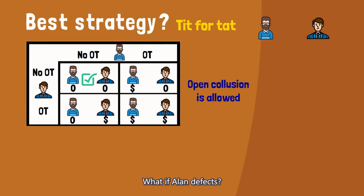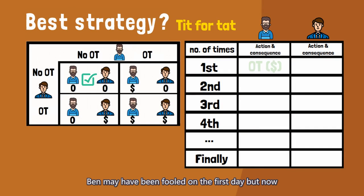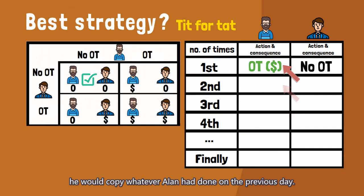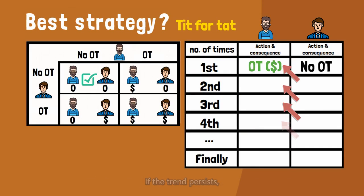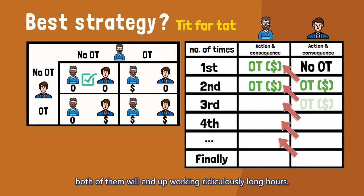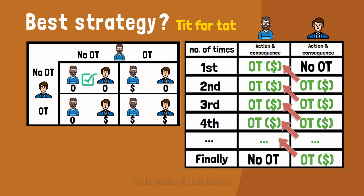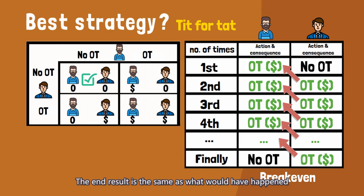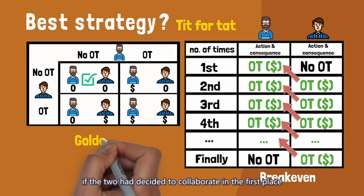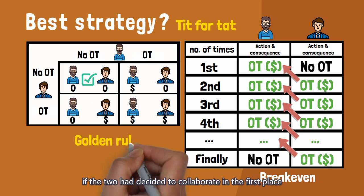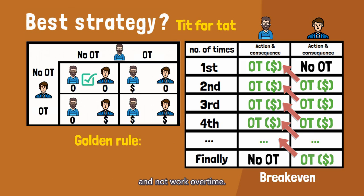What if Alan defects? Ben may have been fooled on the first day, but now he would copy whatever Alan had done on the previous day. If the trend persists, both of them will end up working ridiculously long hours. If Alan decides to stop the loop and finally comply, both would hit break-even. The end result is the same as what would have happened if the two had decided to collaborate in the first place and not work overtime.